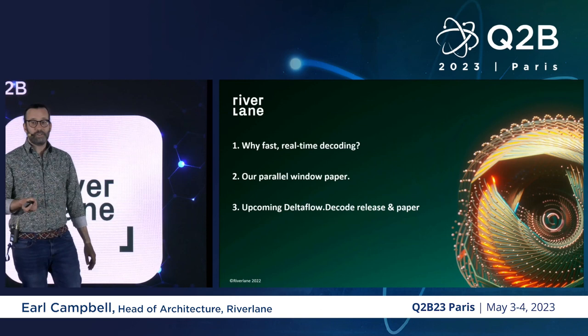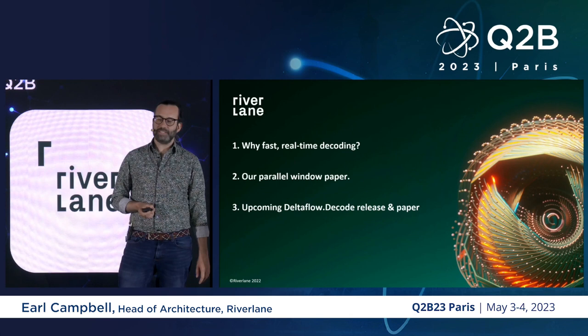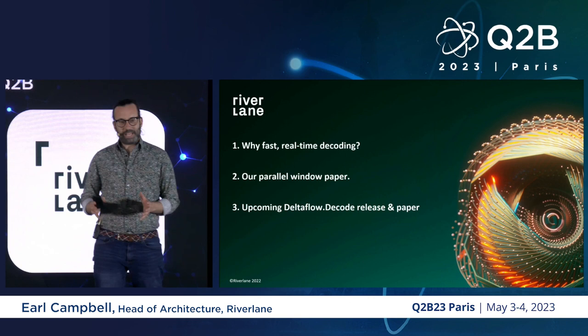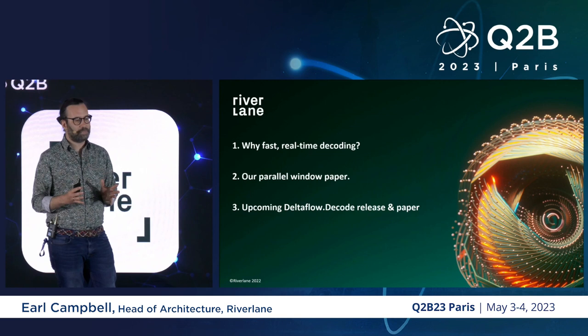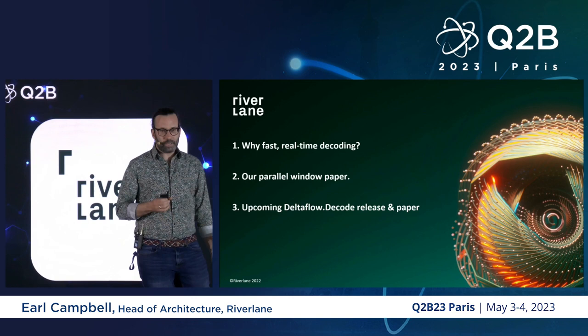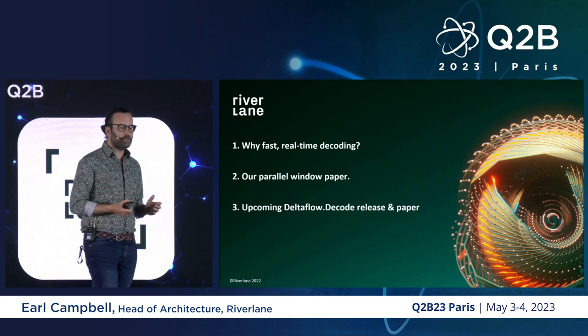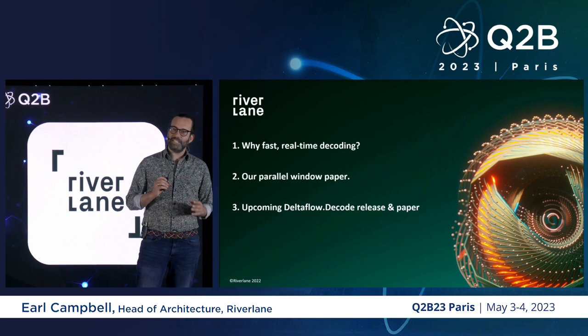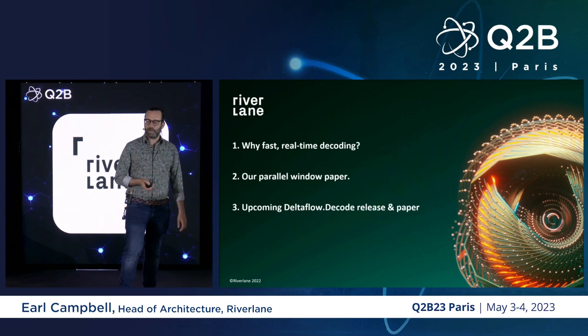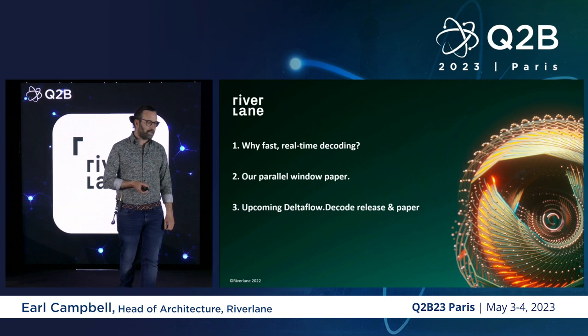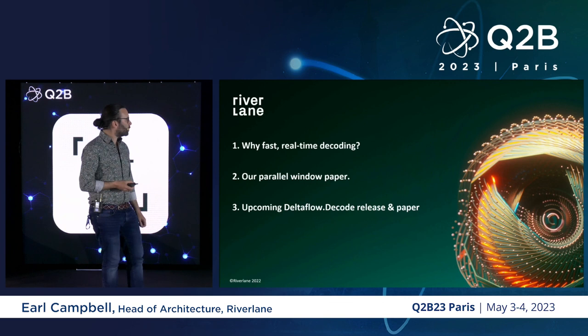First, I'm going to motivate why we need fast real-time decoding. We heard a little about this in the morning — for our quantum computer, we can expect a large HPC infrastructure, and the heaviest load in that HPC infrastructure is going to be carried by the decoding part. Second, I'll give a research-style presentation about a recent paper on a method we call parallel window decoding. Third, I'll talk about our upcoming product, Delta Flow Decode, our FPGA decoder, and show some preliminary results on how it's performing.